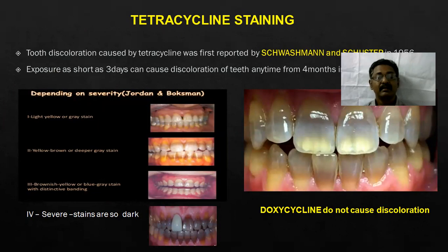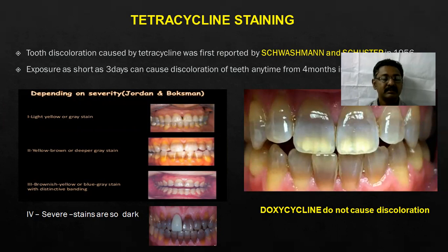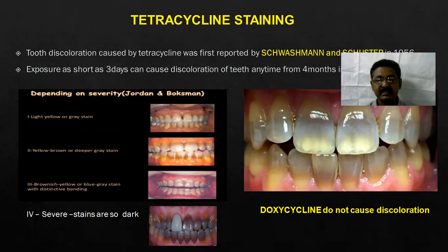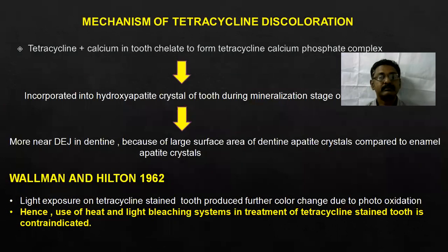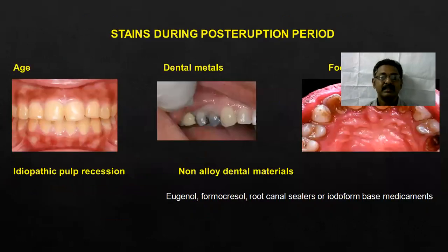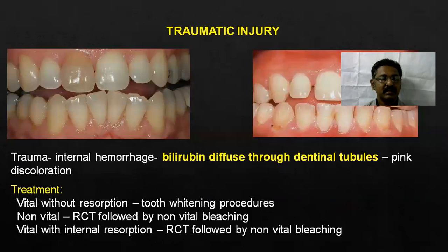Then this is a clinical picture of tetracycline staining — tetracycline tooth discoloration. There are three grades based on the severity: grade 1 is light yellow or gray stain, grade 2 is yellow-brown or deeper gray stain, grade 3 is brownish-yellow or blue-gray stain with distinctive banding, and grade 4 is severe stains. Then stains during the post-eruptive period: age, the different dental materials we use, food and beverages, then traumatic injury.